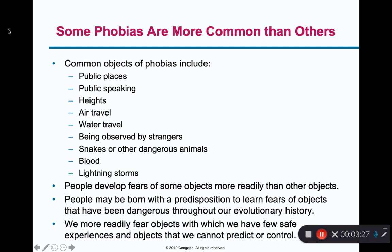For example, when it comes to morning sickness, a lot of the reason women have morning sickness is that's their body informing them that this is not a substance you should have. And the same thing doesn't happen when a pregnant woman has alcohol because we haven't developed this aversion to alcohol yet in our biology. So a lot of our fears and phobias are built into our biology, and a lot of them involve relatively new technologies like alcohol that we haven't built into our biology yet.